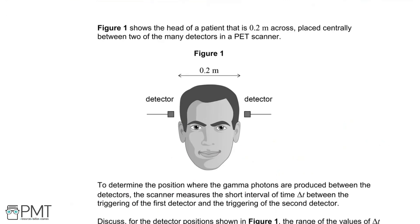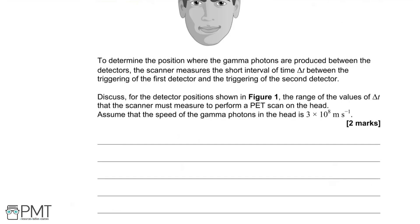Figure 1 shows the head of a patient that is 0.2 meters across, placed centrally between two detectors in a PET scanner. To determine the position where the gamma photons are produced, the scanner measures the time interval delta t between the triggering of the first and second detector. Discuss the range of values of delta t the scanner must measure to perform a PET scan on the head, assuming the speed of gamma photons in the head is 3 × 10⁸ m/s — the speed of light.